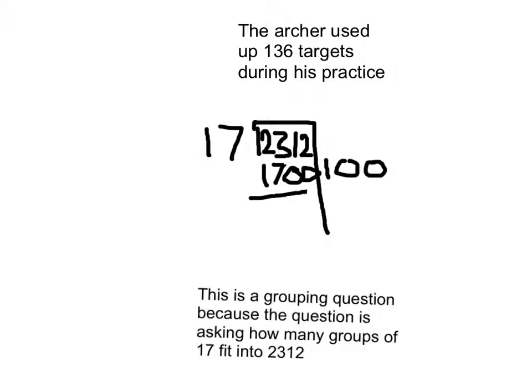17 times 100 is 1,700. 2,312 minus 1,700 is 612.